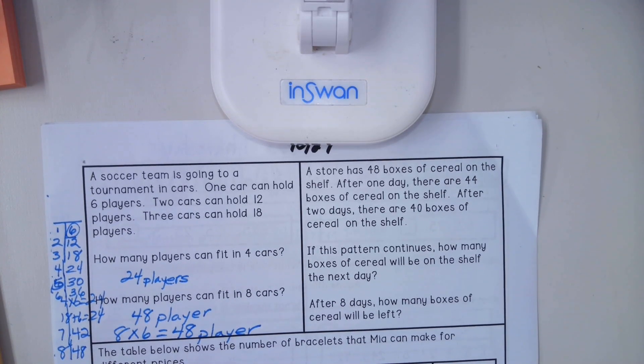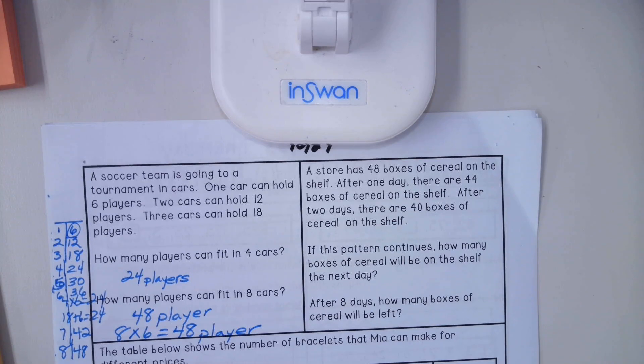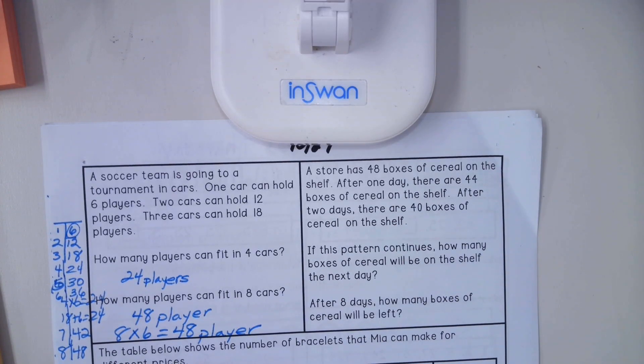Problem three, I will just read the first question to you and then let's figure that out first and then you can do the rest on your own. It says the table shows the number of bracelets that Mia can make for different prices. What is the cost of one bracelet?